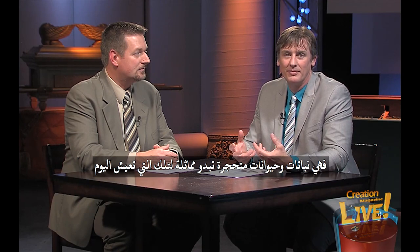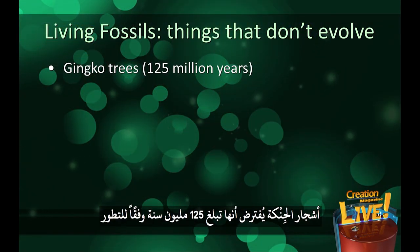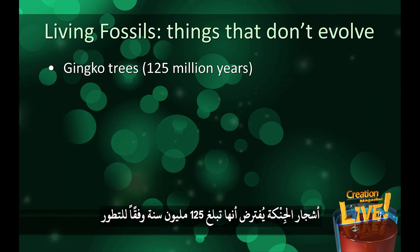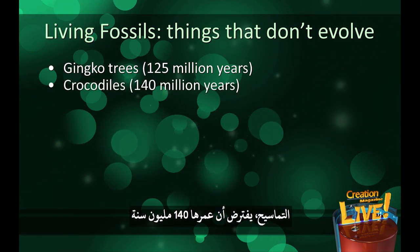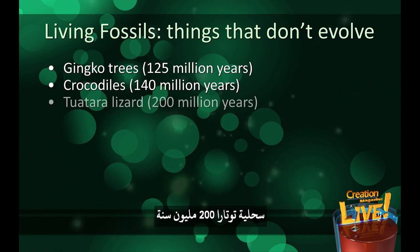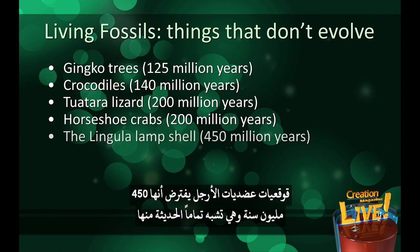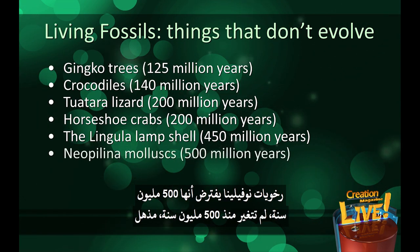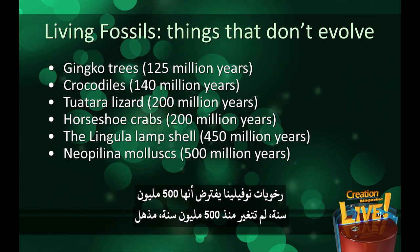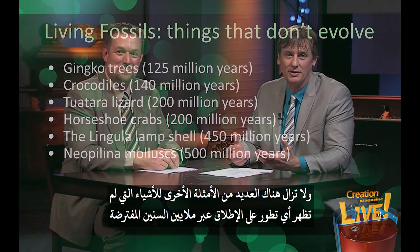Living fossils are another massive problem for evolutionists, but no problem if there was a global flood. There are fossilized plants and animals that look identical to those living today. Examples include: ginkgo trees supposedly 125 million years old, crocodiles supposedly 140 million years old, tuatara lizards at 200 million years, horseshoe crabs at 200 million years, the lingula lampshell supposedly 450 million years old, and neopilina molluscs supposedly 500 million years old — no change in 500 million years. There are still many other examples showing zero evolution over these supposed millions of years, but it fits with a global flood.